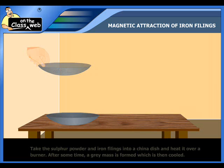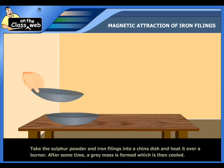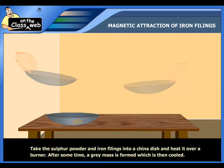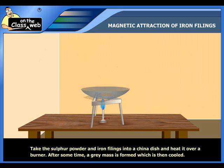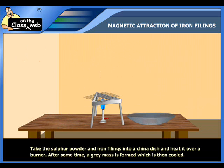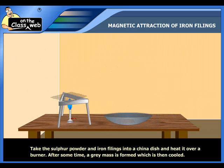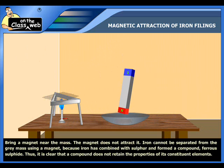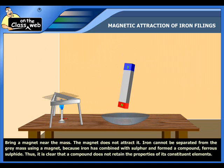Now, take the sulfur and iron filings into a china dish and heat the mixture over a burner. You can observe that a gray mass is formed because of heating. Now, cool the mass. If you bring the magnet near this mass, the magnet does not attract it.